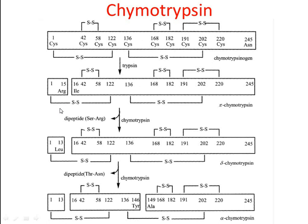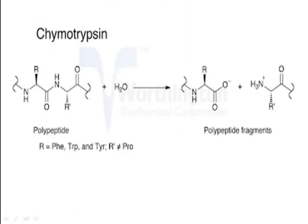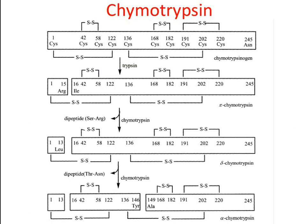Delta-chymotrypsin further undergoes digestion by earlier-synthesized chymotrypsin, which removes a dipeptide from positions 147 and 148, giving the final product alpha-chymotrypsin. Alpha-chymotrypsin has full activity and hydrolyzes peptide bonds at the carboxyl terminal of phenylalanine, tryptophan, and tyrosine residues. Although chymotrypsin contains three polypeptide chains linked by disulfide bridges — so it is not strictly monomeric — the sequential numbering of the original chymotrypsinogen molecule is maintained, and that is why it is considered a monomeric enzyme.